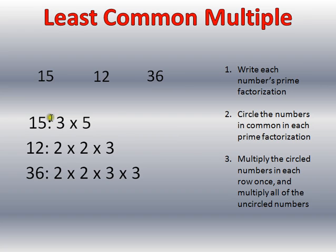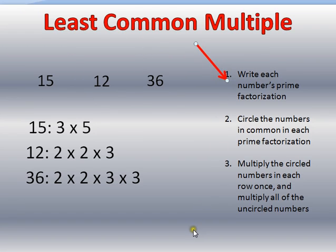So let's look, and let's say I'm trying to find the least common multiple of 15, 12, and 36. Step 1 is going to be to write each number's prime factorization.